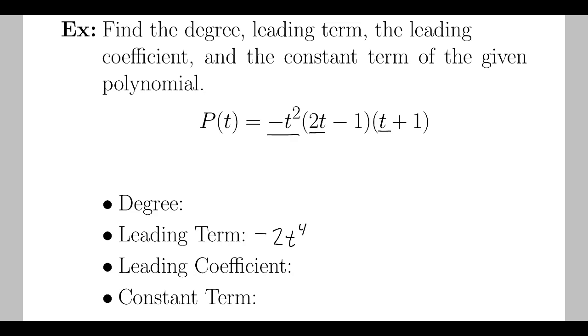Okay, the constant term will come from multiplying the constants from each item being multiplied. It's a one here, a negative one here. This one doesn't have a constant, so that would be 0. And we know if we multiply 0 times anything, it's going to end up with a 0.